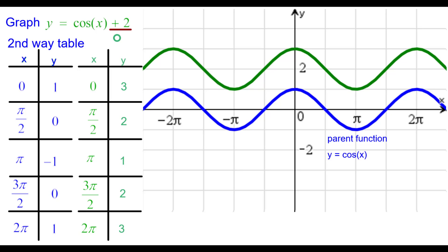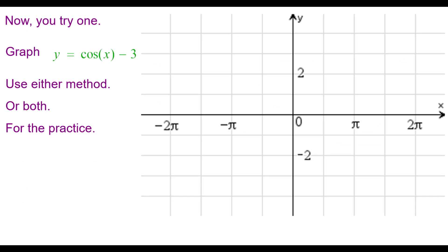And compare it to the parent function. Now, you try one. Graph y equals the cosine of x minus three. Use either method or both for the practice. Pause as needed. Resume when you're ready.